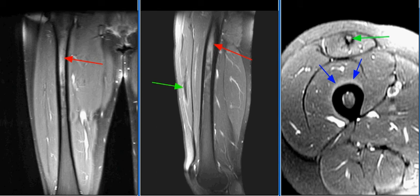There is mild edema along the indirect head of the rectus femoris muscle, suggesting a superimposed subacute component of muscle strain.